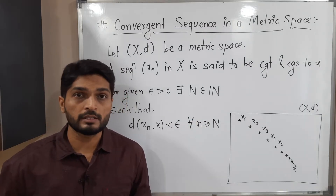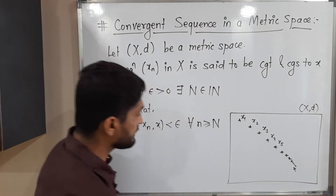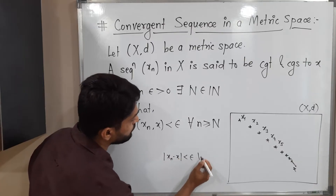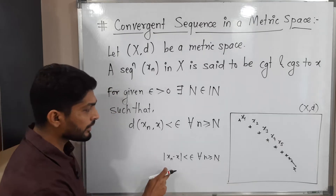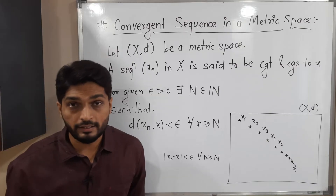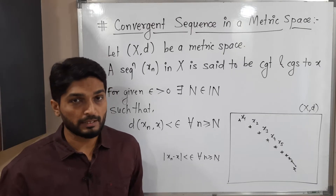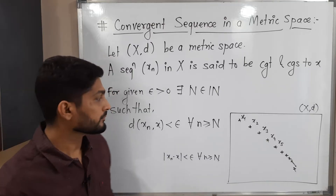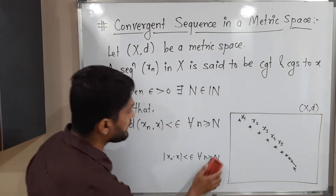This definition is already seen for real numbers in the first year, where it was |X_n − X| < epsilon for all n ≥ N. There is a very small difference here: we use the distance d, or the metric. Actually both have the same meaning, but since we are generalizing the concept to a metric space, we use d.